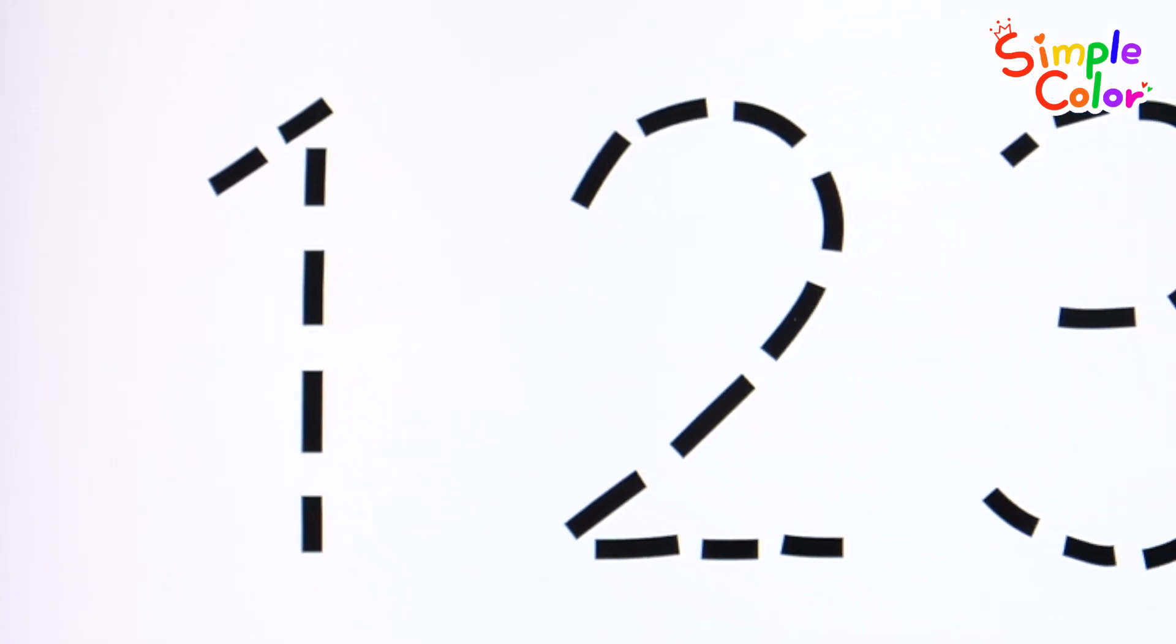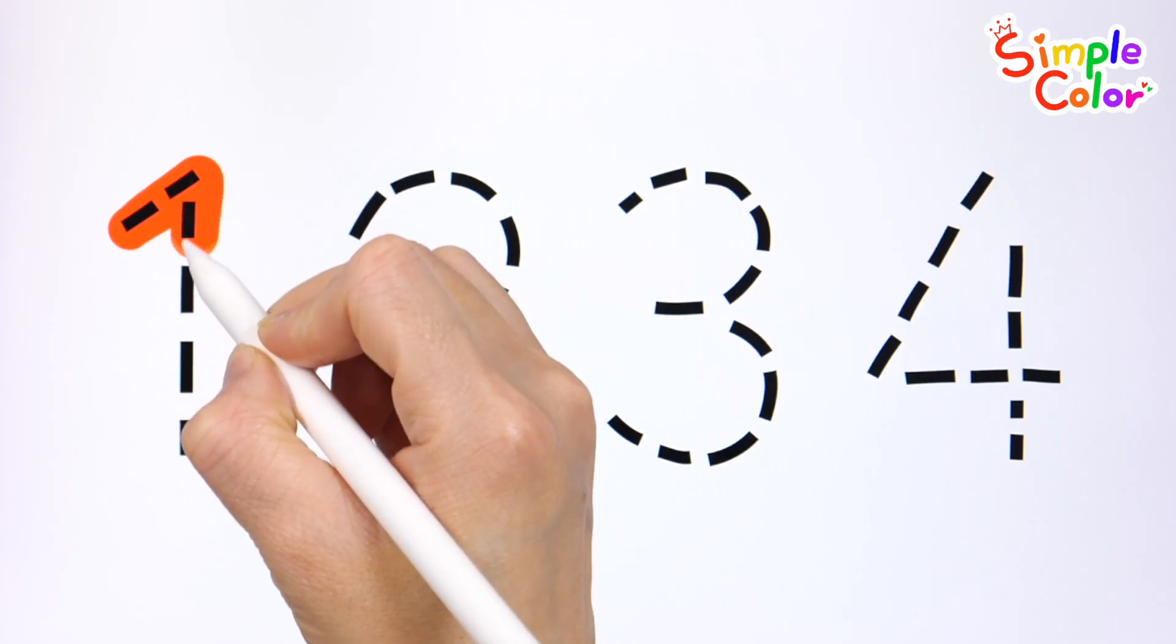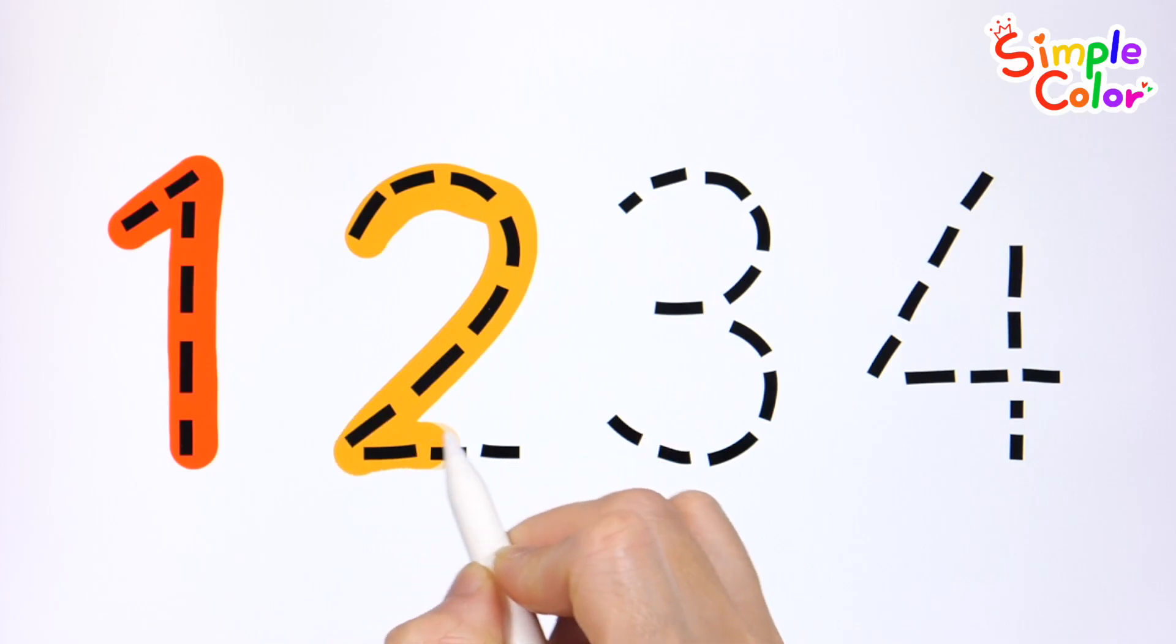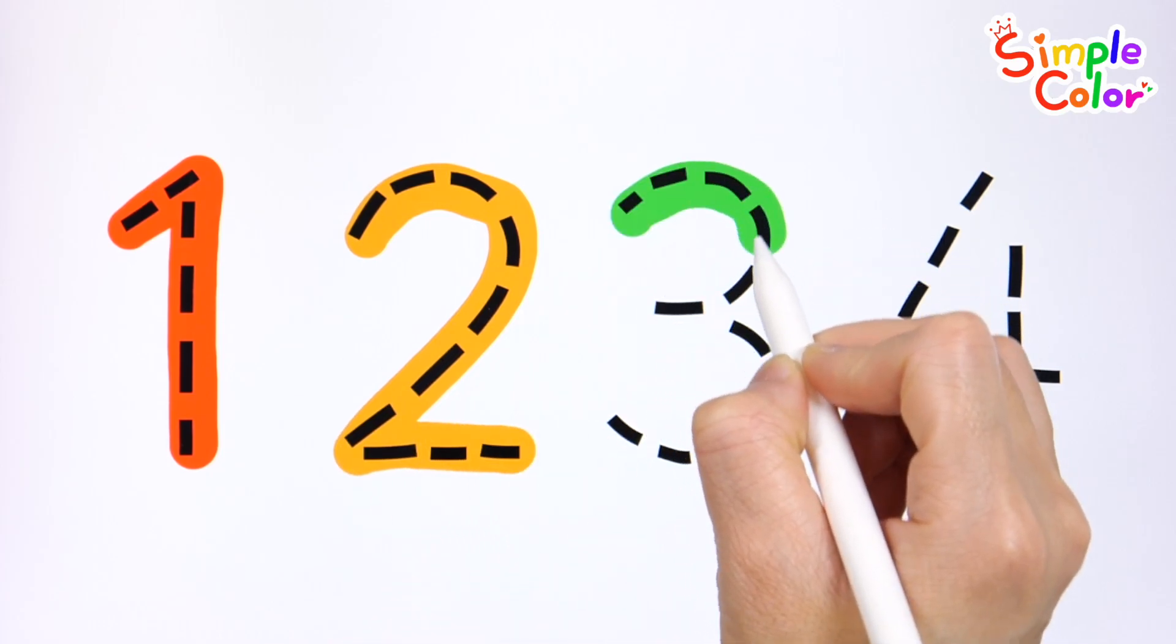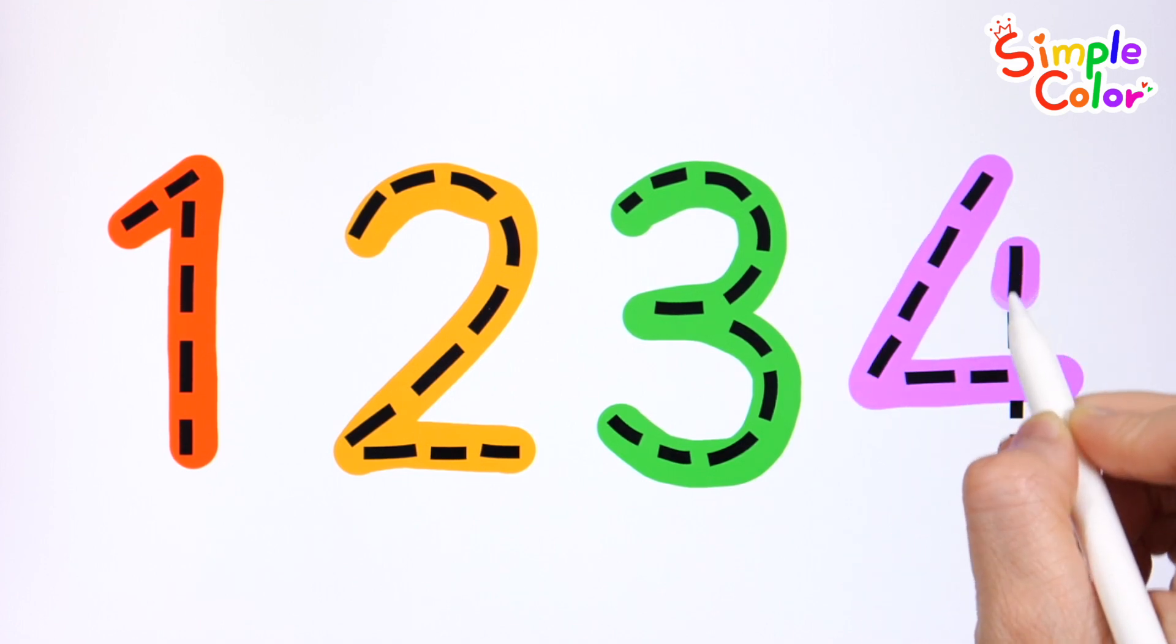Let's write and read the numbers by following the dotted lines. Starting from 1. 1, H, I, J, K, L, M, N. Now let's try it once again. 3, O, P, Q, R, S, T, U. Good job!